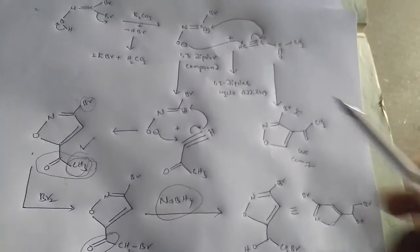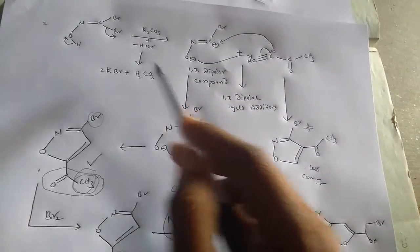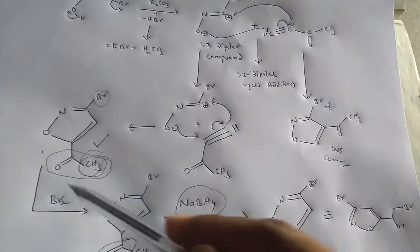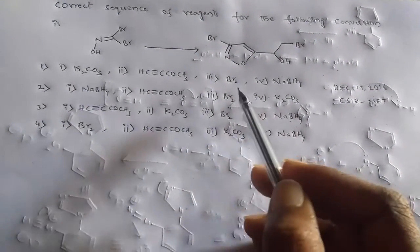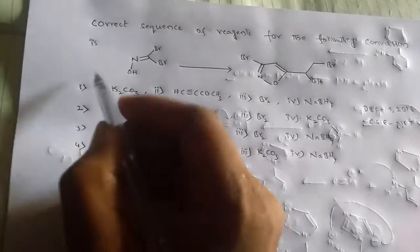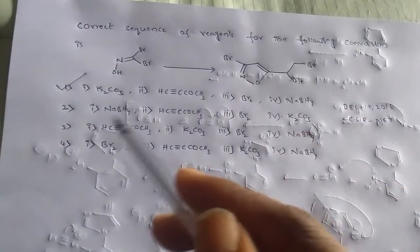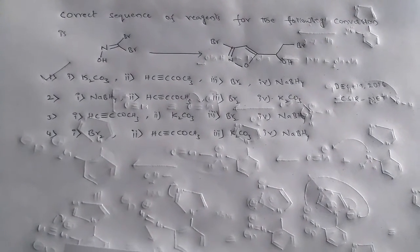So to get the final product, the sequence of reagents is: first K2CO3, second the keto-alkyne (alkyne group), third bromination, and fourth NaBH4. This matches Option 1 — which is the correct sequence. This reaction proceeds via 1,3-dipolar cycloaddition. Thank you; if you like my videos please subscribe to my channel.